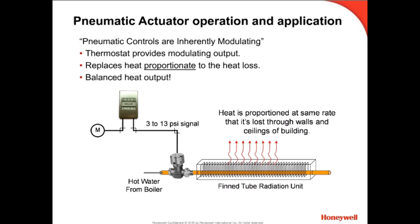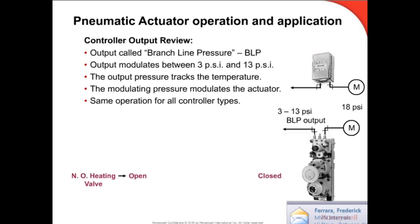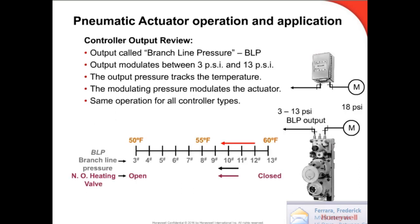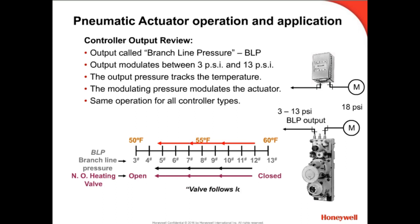In our last video, we discussed how a pneumatic controller modulates its output to proportion the right amount of heating or cooling. This whole concept is dependent upon the actuator's ability to smoothly apply this modulating signal to the damper or valve. The pneumatic system usually operates at 20 psi, and the pneumatic controller controls the outlet pressure, called branch line pressure, or BLP. It's this modulating branch line that then modulates an actuator to complete its task of positioning valves or dampers proportionally.